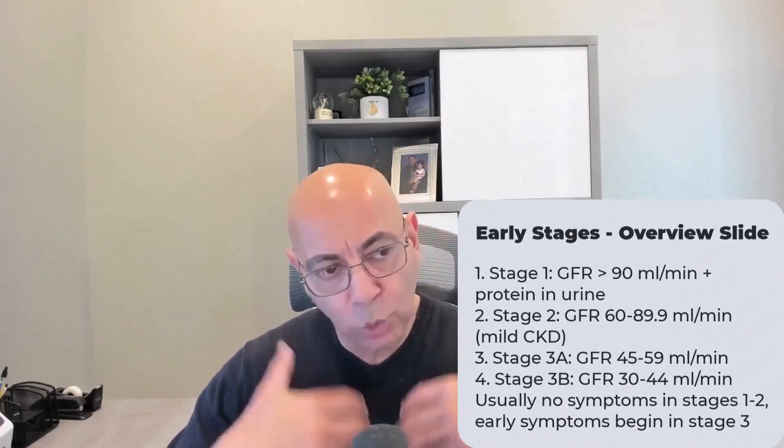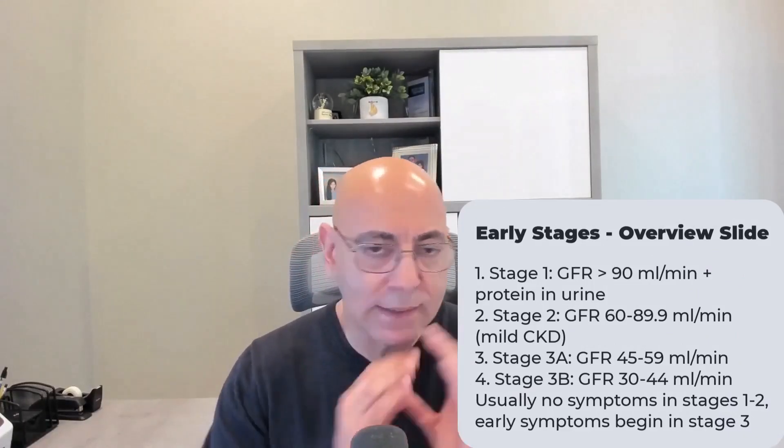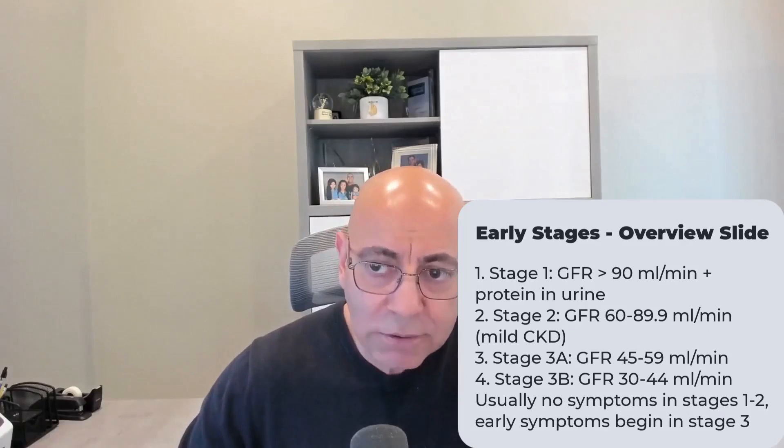Stage one is where your kidney function is above 90 mils per minute — your GFR is greater than 90. A lot of people walking around have GFRs higher than that, so does that mean they all have stage one? No. You are looking for not just the GFR, but also signs of kidney damage, which is protein in the urine. So GFR greater than 90 and protein in the urine.